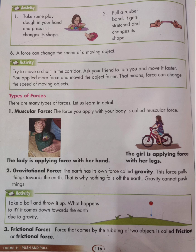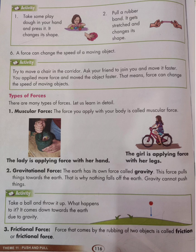Next is gravitational force. The Earth has its own force called gravity. This force pulls things towards the Earth — that is why nothing falls off the Earth. Gravity cannot push things. Activity: take a ball and throw it up. What happens to it? It comes down towards the Earth due to gravity.